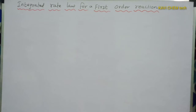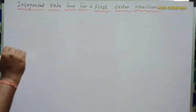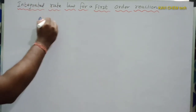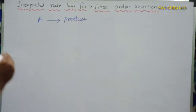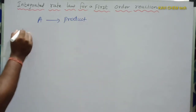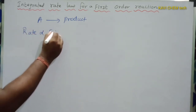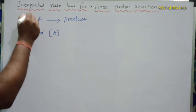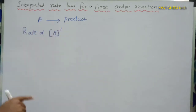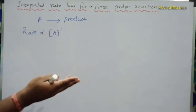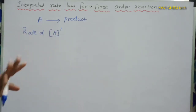Integrated rate law for first order reaction. For a first order reaction, the order of the reaction is one. In the reaction A gives product, the rate is directly proportional to the concentration of the reactant raised to the power one. If the power is one, it is called first order. If the value is two, it is second order; zero, it is zero order.